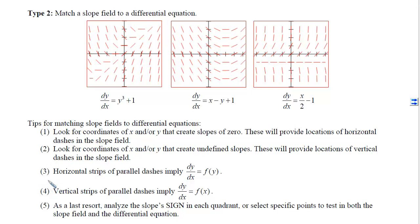Tips 3 and 4 have to do with strips of parallel dashes. Along the line y equals negative 1, all the dashes are parallel. In fact, for any fixed y value, as you travel across the slope field, all consecutive hash marks have the same slope. When horizontal strips have the same slope throughout, dy/dx depends on y only. We already matched this equation from Tip 1, and we can confirm it because this differential equation is in terms of y only.